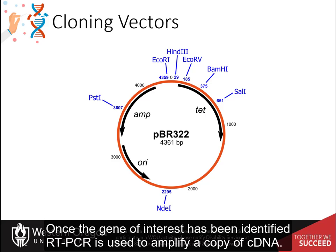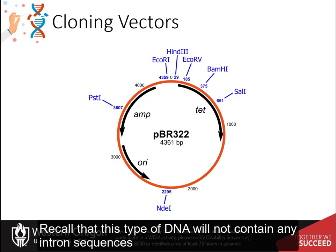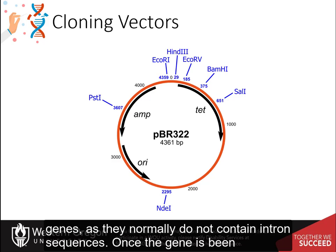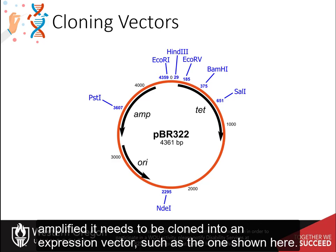Once a gene of interest has been identified, RT-PCR is used to amplify a copy of cDNA. Recall that this type of DNA will not contain any intron sequences, making gene expression easier. Regular PCR can be used for prokaryotic genes as they normally do not contain intron sequences. Once the gene has been amplified, it needs to be cloned into an expression vector, such as the one shown here.